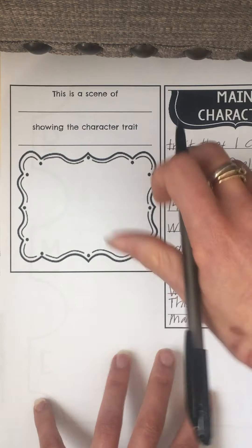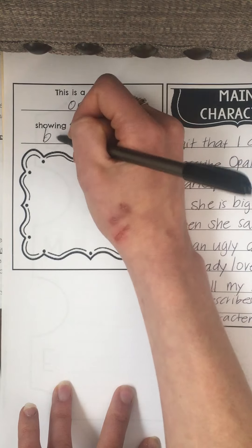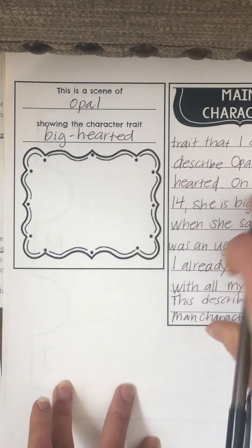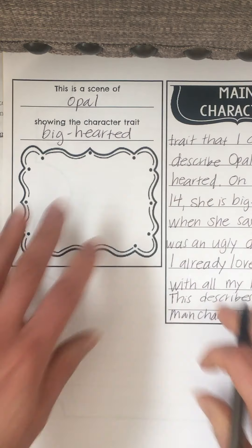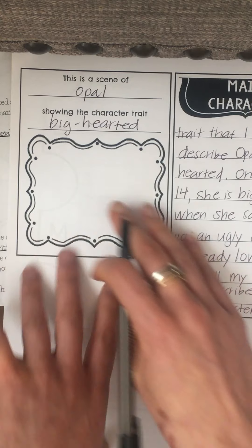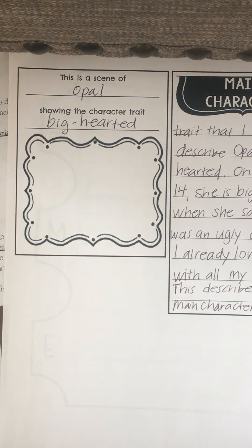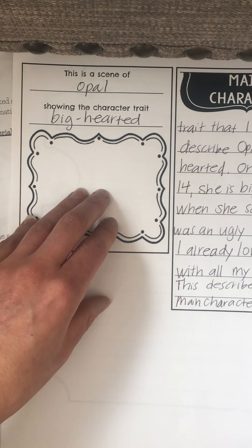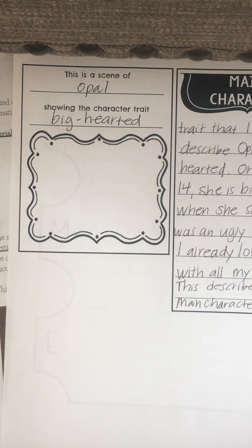This is the scene of Opal showing the character trait 'big-hearted.' You would pick a scene — it could be the scene I chose, or a different scene you want to show. Then I would draw a picture of Opal; in this case, I would draw the dog when she decided she was going to keep him for her own. That's what I would draw in this box. Make sure to do this neatly, take your time, and if you have any questions, you know where to find me.